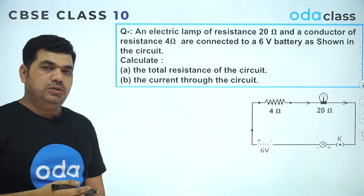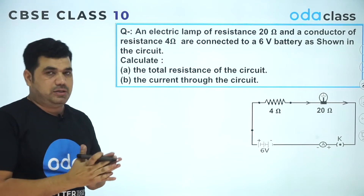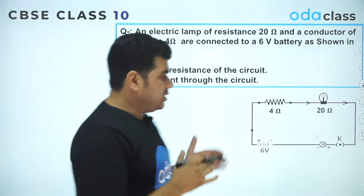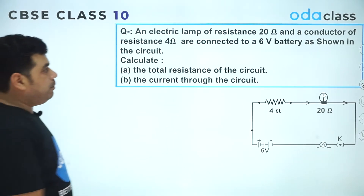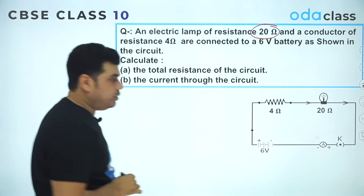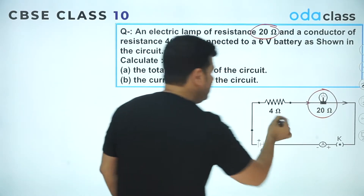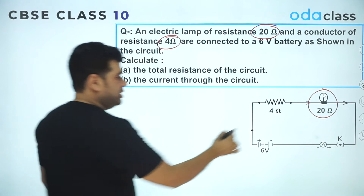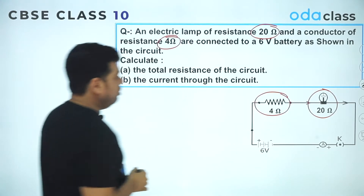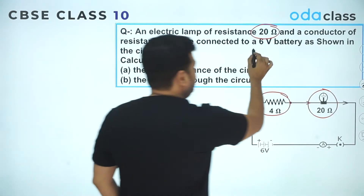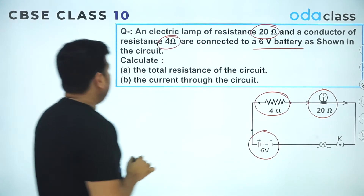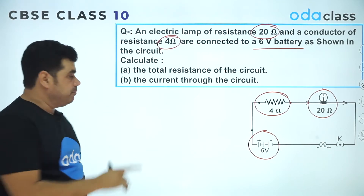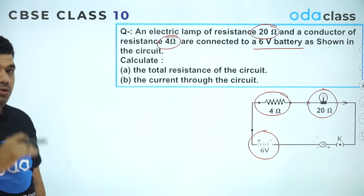The first question is of three marks, distributed across different parts. An electric lamp of resistance 20 ohms and a conductor of resistance 4 ohms are connected to a 6-volt battery, as shown in the circuit diagram. You have to calculate: the total resistance of the circuit, the current through the circuit, and two more parts on the next slide.